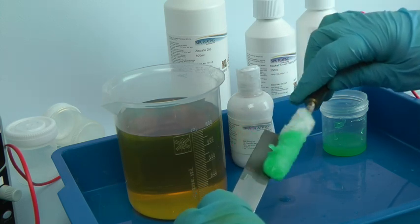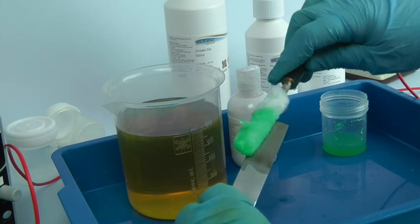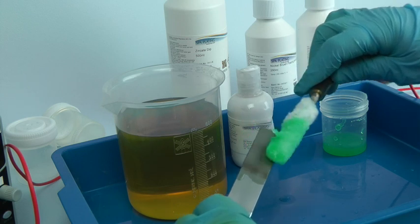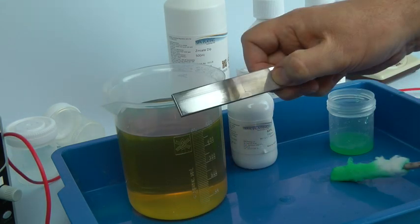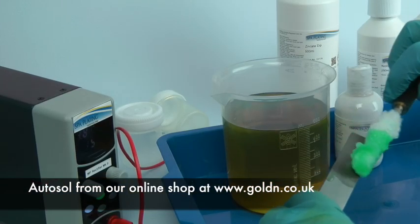Once you've built a suitable thickness of nickel and if you want a more polished surface, you can achieve this with hand polishing with a little autosol. This can be bought on our online shop at www.golden.co.uk.